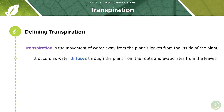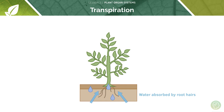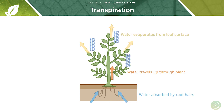We have water diffusing through the plant via the xylem from the roots, then it evaporates from the leaves, and as water evaporates out of the plant, more water is taken up from the roots. We refer to this as the transpiration stream. Diagrammatically: water is absorbed by the root hairs from the soil, moves through the transpiration stream via the xylem, reaches the leaves, and evaporates from the leaf surface.